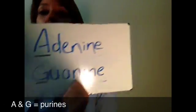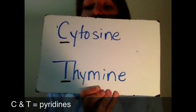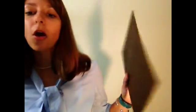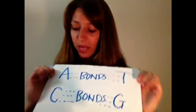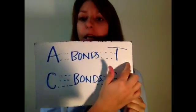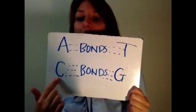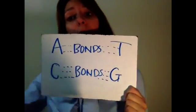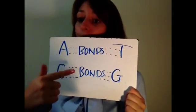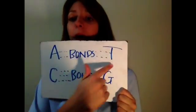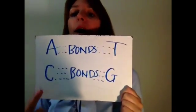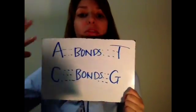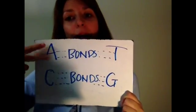Technically A and G are what we call purines, and C and T are what we call pyrimidines. When they bind, they're only going to bind with certain kinds of base pairs. So A is only going to bind with T — adenine only binding with thymine — and C is only binding with G — cytosine only binds with guanine. In between these two base pairs are hydrogen bonds. Adenine binds with thymine using two hydrogen bonds, whereas cytosine binds with guanine with three hydrogen bonds. So remember: two between A and T, and three between C and G.